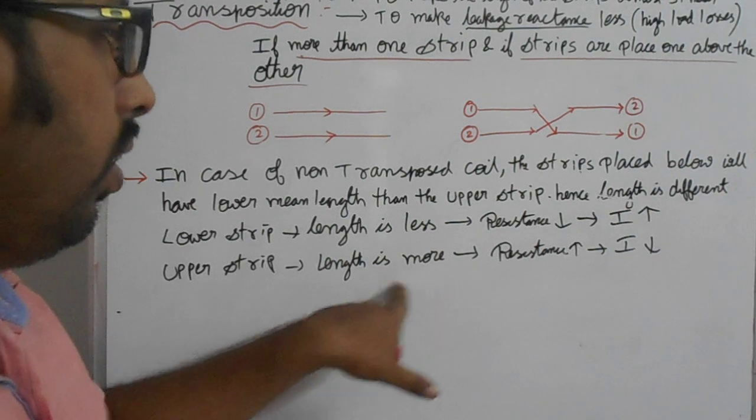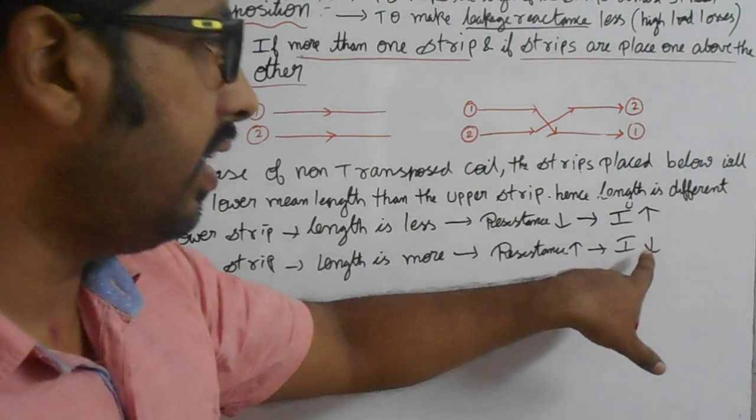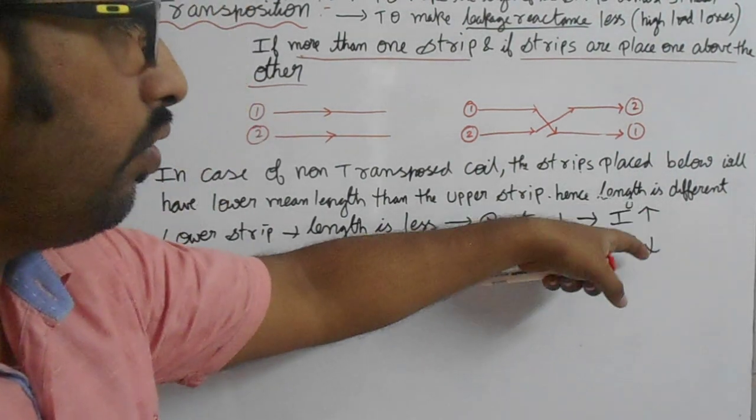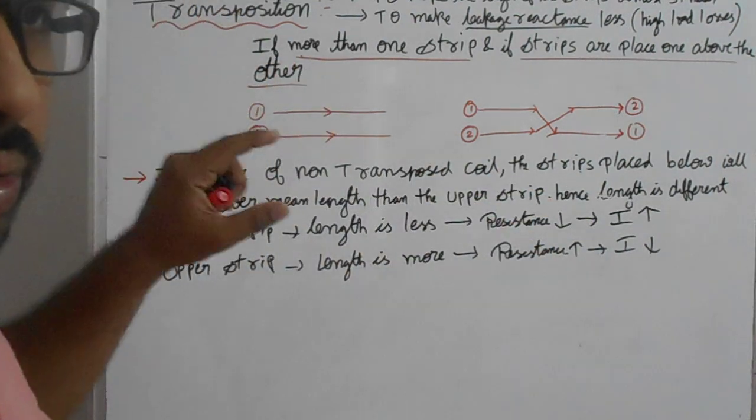Similarly, the upper strips have length is more, resistance is more, current decreases. So uneven distribution will be taking place when we do not do transposition.